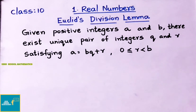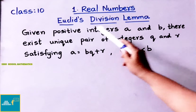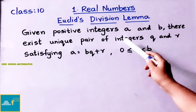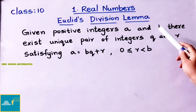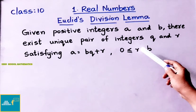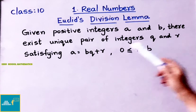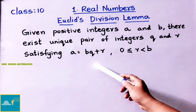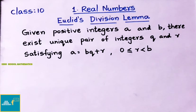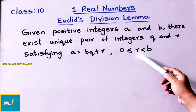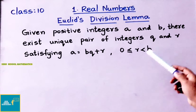Let us see the theorem Euclid's Division Lemma. First let us see the statement. For given positive integers A and B, there exist a unique pair of integers Q and R satisfying A equals BQ plus R, where 0 is less than or equal to R and R is less than B.